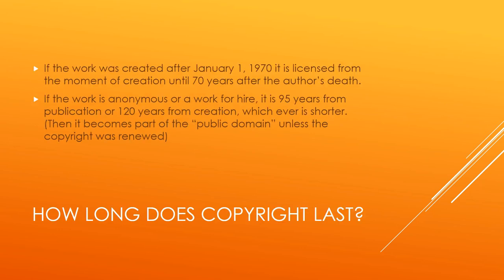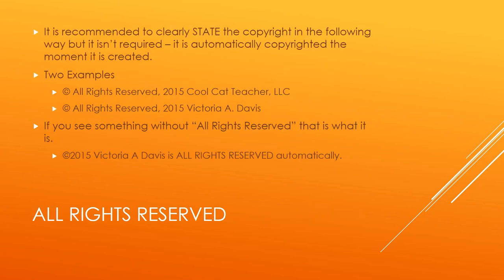Copyright starts the moment of creation until 70 years after the author's death, unless it was prior to 1970 — there are other rules you'll have to look up. If it's anonymous or a work for hire, it's 95 years from publication or 120 years from creation, whichever is shorter. Then it becomes part of the public domain, which means you can pretty much use it. There's a ton of stuff in public domain, including the works of William Shakespeare and lots of older classic works. The copyright can be renewed, so be careful and look for copyright marks at the bottom of web pages and in the front of books.